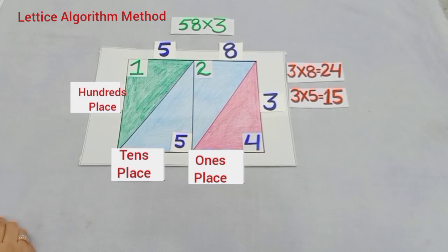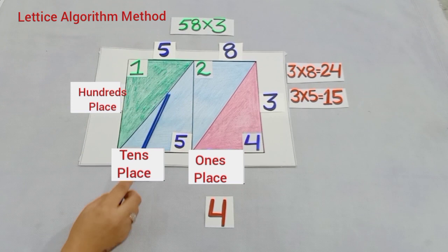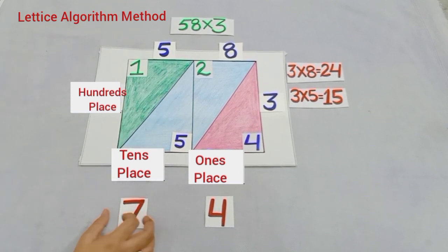Now, to find the answer of all this, look at the different digits placed in the different areas. Firstly we have four. So, we will write four at ones place. To write the digit at the tens place, we will add two diagonal digits, five and two and the sum of these two is seven and we will write seven under tens place.